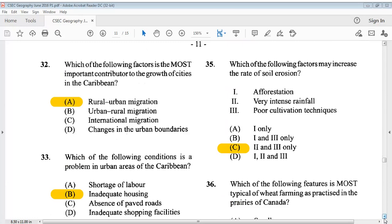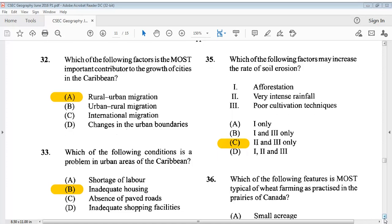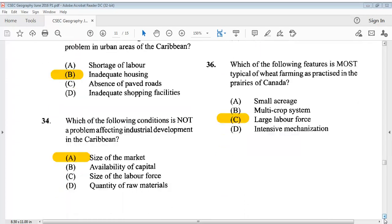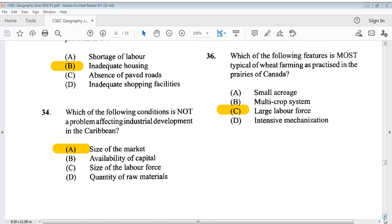Question 32: Which of the following factors is the most important contributor to the growth of cities in the Caribbean? The answer is A, rural to urban migration. Question 33: Which of the following conditions is a problem in urban areas of the Caribbean? The answer is B, inadequate housing. Question 34: Which of the following conditions is not a problem affecting industrial development in the Caribbean? The answer is A, size of the market.